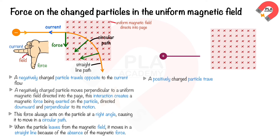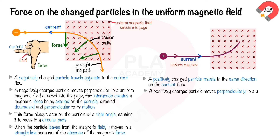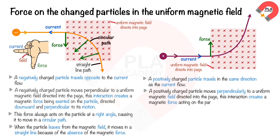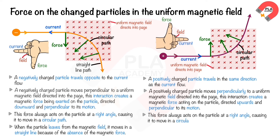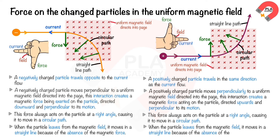For a positively charged particle traveling in the same direction as the current flow, interacting perpendicularly with a uniform magnetic field directed into the page, the magnetic force acts upward. Applying the Fleming left-hand rule — index finger into the page, middle finger pointing right — the thumb points upward. This force always acts at a right angle, causing the particle to move in a circular path. When the positively charged particle leaves the magnetic field, it moves in a straight line due to the absence of magnetic force.